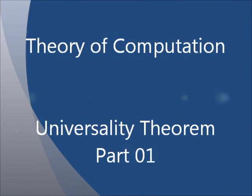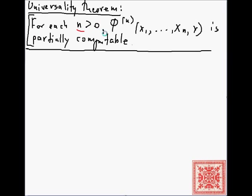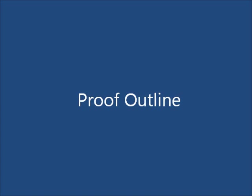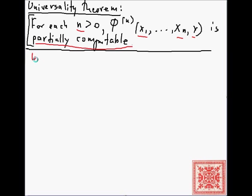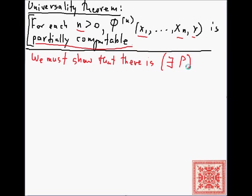Let's continue with our series on universal programs and talk about the universality theorem — this is where we left off in our previous screencast. For n positive, there is a function which is partially computable, and that is what we have to show. We must show that there is a program in our language L that computes phi.